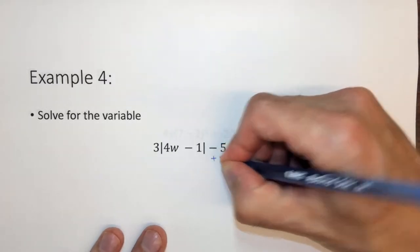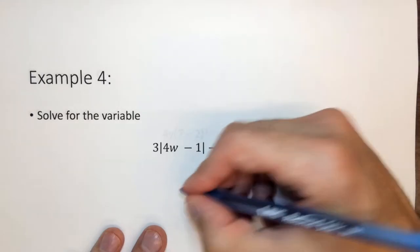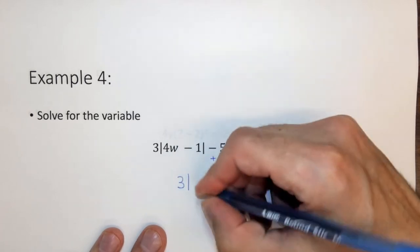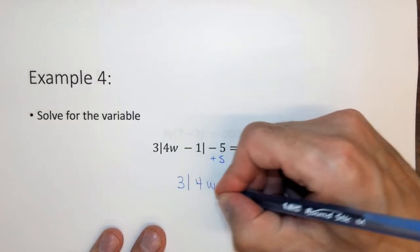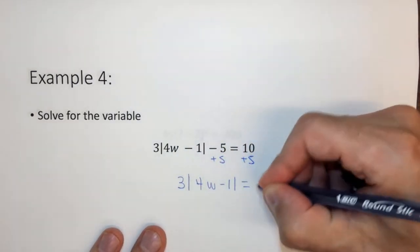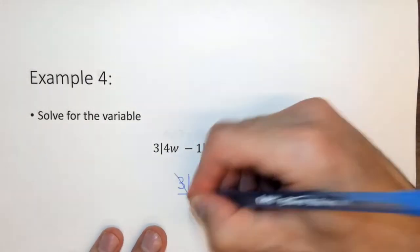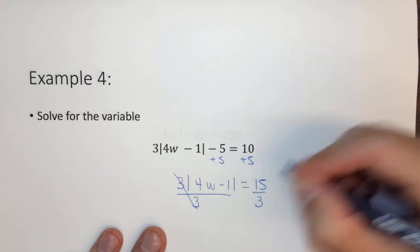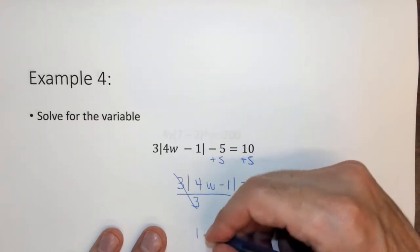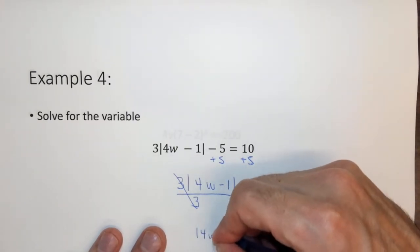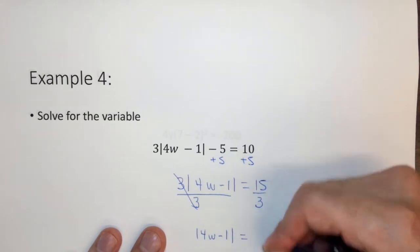Let's isolate what's in the absolute value. The first thing we want to do is add 5 to both sides, and we get 3 times the absolute value of 4w minus 1 equals 15. Now we want to get rid of the 3, so we divide by 3. 15 divided by 3 is 5. So now we have the absolute value of 4w minus 1 equals 5.